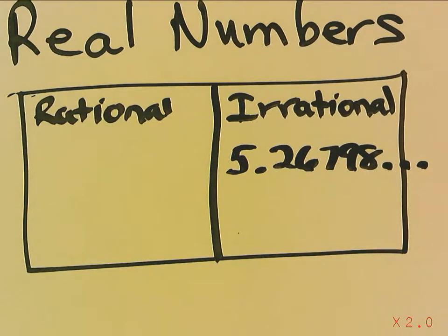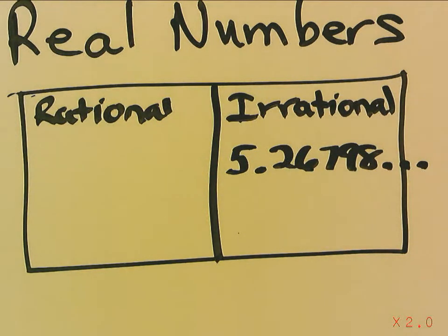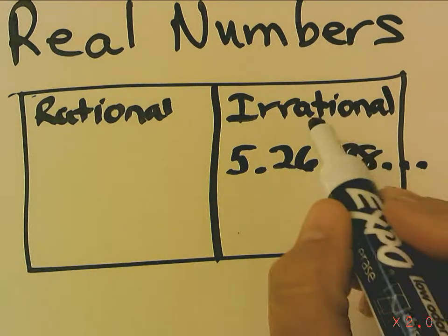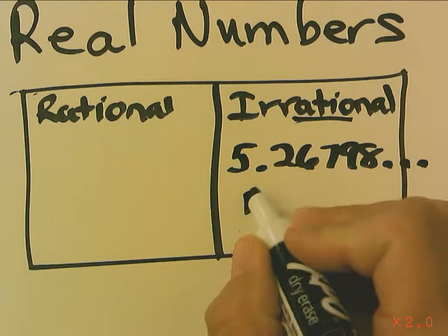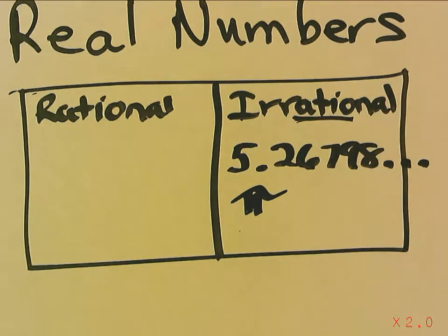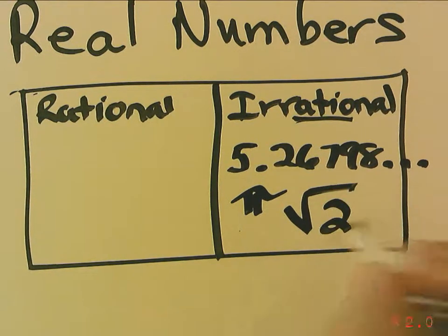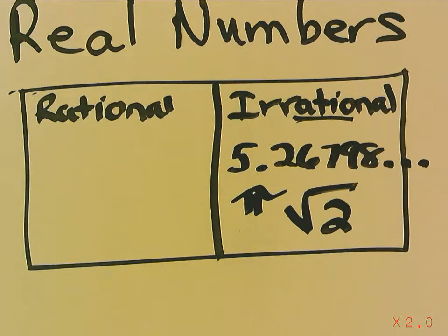They don't repeat, you can't use bar notation, and they don't terminate. Since they don't terminate, you can never determine the denominator to create it as a fraction — irrational means cannot be written as a fraction. Pi is an irrational number because it goes on forever. Another irrational number is the square root of 2. The easiest way to generate a list of irrational numbers is the square root of a non-perfect square.